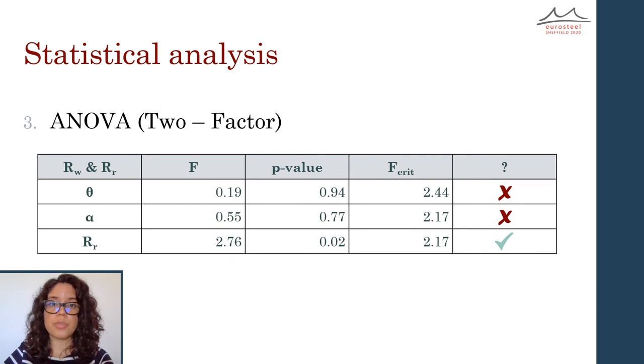At this point, the ratio between the widths appeared to be the strongest cause for variation. Under this discovery, a two factor analysis of variance was performed. It was found that the variation in the results is indeed affected by an interaction between the ratio of the widths, R sub W, and the ratio of the notch to thickness, R sub R. This suggests that further research on this interaction should be conducted.